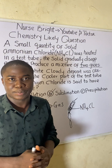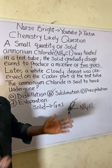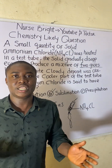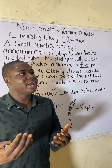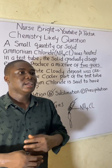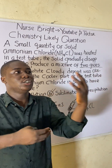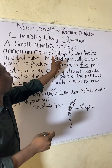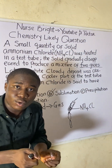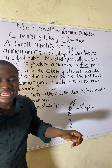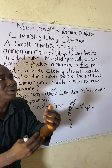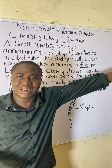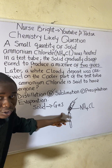Evaporation has to do with the change of state of a liquid to become a gas. Ammonium chloride was a solid, not a liquid. Since evaporation is liquid-to-gas and this case is solid-to-gas, the answer is definitely sublimation, not evaporation.